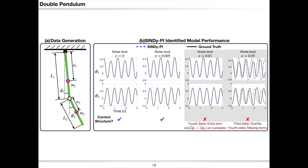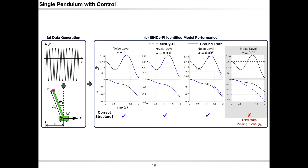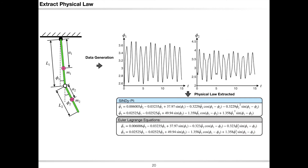If the system is driven by control input, SINDy-Pi can also be used to identify the equation of motion by including the effect of control in the nonlinear features. More interestingly, we now have the ability to extract physical laws from data. Many physical laws have an implicit form, for example the Euler-Lagrangian equation. If we build our library correctly, SINDy-Pi can extract this information from the measurement data directly, which we can illustrate using the double pendulum as an example.